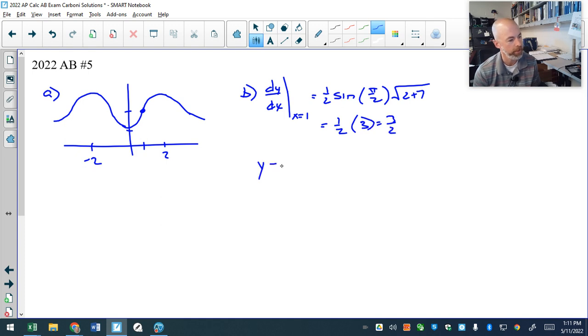So my tangent line is y minus two, I like point slope form, is three halves of x minus one. And then approximating, let me scroll that down to read the question, approximate f of 0.8,